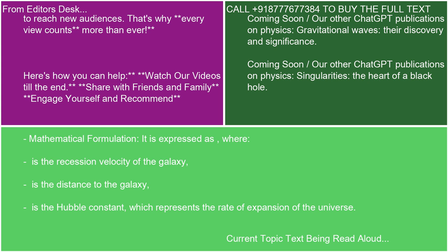Mathematical Formulation: Hubble's Law is expressed as v = H₀ × d, where v is the recession velocity of the galaxy, d is the distance to the galaxy, and H₀ is the Hubble constant, which represents the rate of expansion of the universe.